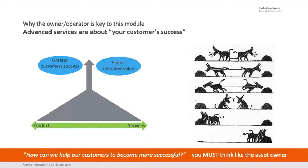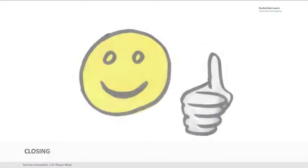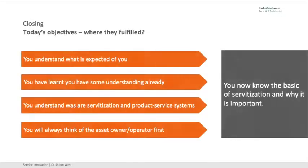To do this, the manufacturer has to think of you like an asset owner, not a traditional customer. Closing: hopefully you have an idea of what's expected of you. You've learned something, and you've learned that you actually understand something already — you understand what servitization is, it's a long word, and you understand what a product-service system is. From now on you're always going to think about the asset owner-operator first. In class, for the rest of the time, we don't think about the manufacturer first — always the asset owner-operator. That's really important because sometimes it goes to an intermediary before it's installed and used. Thanks very much.